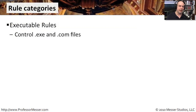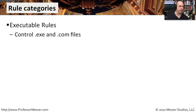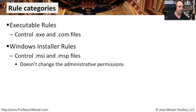Let's step through the rule categories. Executable rules cover executable files and COM files — those programs that run inside of Windows. If we want to allow or disallow those, we might want to create some rules for executables.